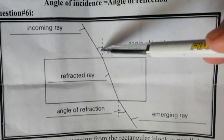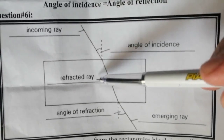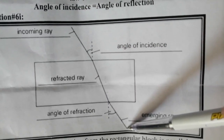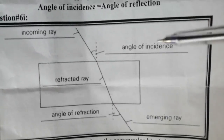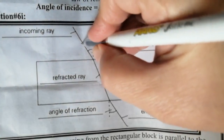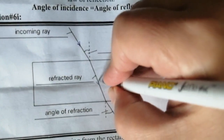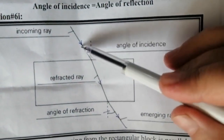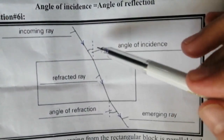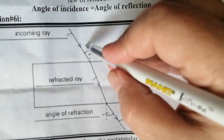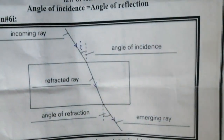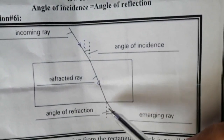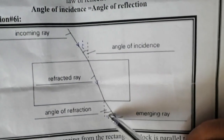This is the incoming ray, this is the refracted ray, and this is the emerging ray. The angle between the normal and the incoming ray is the angle of incidence. This is the angle of incidence, and the angle of refraction is the angle between the normal and the refracted ray. This is the angle of refraction.